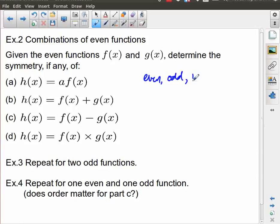So if f of x and g of x are even functions, is this going to produce an even function, an odd function, or neither? Even, odd, or neither. So that's what we're trying to determine. What we're trying to find out is something either even, odd, or neither. And you can see going further, I ask you to repeat this entire set for two odd functions, and then repeat it again for one even and one odd. And I even ask the question, does it matter if we do an even first and then an odd, or an odd first and then an even?